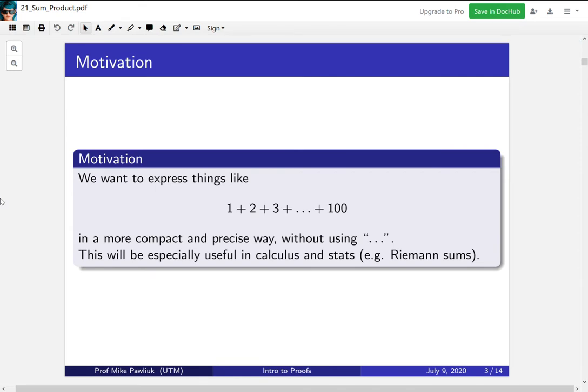Our motivation is that we want to express things like 1 plus 2 plus 3 plus dot dot dot plus 100 in a more compact way and in a more precise way. Precise means without using the dot dot dot. This is useful because the dot dot dot sort of hides what's going on and we have to infer what's happening. We have to guess the pattern, and in a case like this it's simple enough to guess that it's going up by one, but with more complicated ones it's not as clear and we don't really want to have ambiguity in math, so we want to come up with a more precise way of expressing these types of sums. This will be especially useful in calculus and statistics where we use sums all the time, for example Riemann sums.